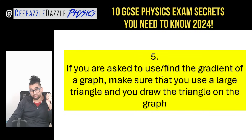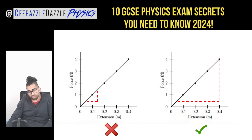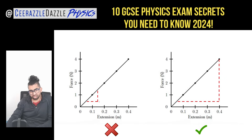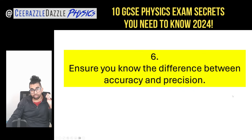Tip five: if you're asked to use or find the gradient of a graph, make sure you use a large triangle and draw it on the graph. For example, with a force vs. extension graph for Hooke's law, the spring constant is the gradient — force divided by extension. Don't use a small triangle; use a large triangle drawn on the graph to gain the mark.